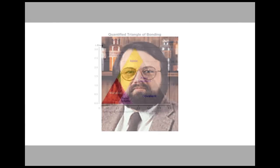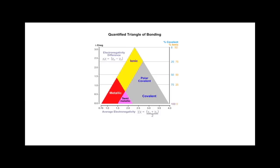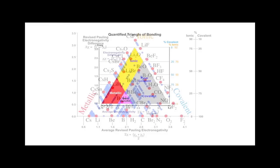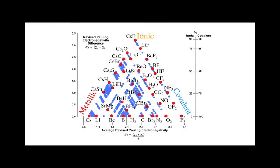In 1993, Bill Jensen published a paper in which he quantified the triangle using electronegativity. It's possible to add many, many binary materials and elements to Jensen's quantitative triangle of bonding.